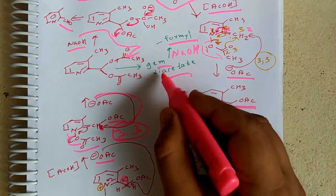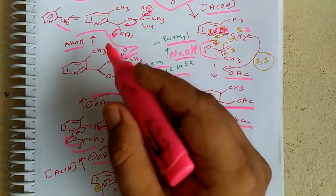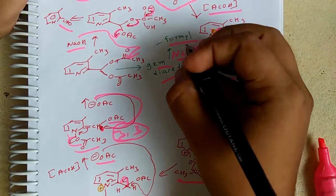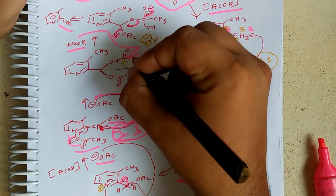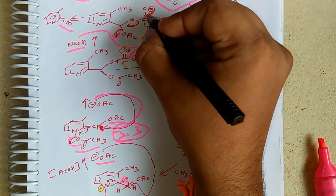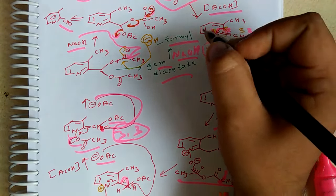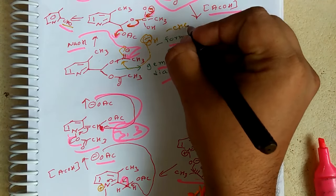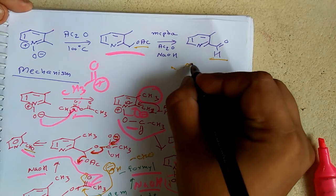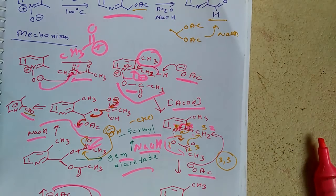Finally we get a gem-diacetyl (gem-OAc) group. When NH is added, the mechanism involves OH⁻ attacking the carbonyl carbon, forming an O⁻ intermediate, which then shifts and the OAc is removed. We end up with a CHO (formyl/aldehyde) group. So from OAc to CHO is the transformation via the two OAc groups. When you add NH into this, you get the CHO group — this is a lengthy but step-by-step understandable mechanism.